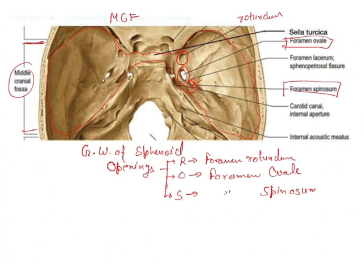We have already discussed that there is a fissure known as the superior orbital fissure. This superior orbital fissure is seen between the two wings of the sphenoid bone — the lesser wing and the greater wing. Between these two you will see the superior orbital fissure. The superior orbital fissure is said to be present in the middle cranial fossa.